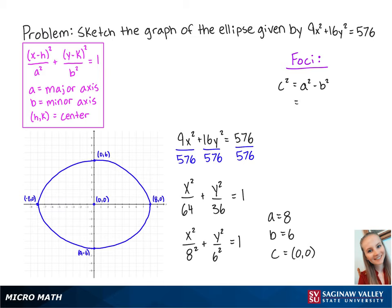So for this problem, we have 8 squared minus 6 squared, which is equal to 28. So c is equal to the square root of 28, which is roughly about 5.29. So the two focus points will be at negative 5.29, 0 and 5.29, 0.